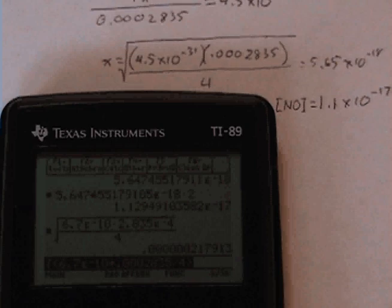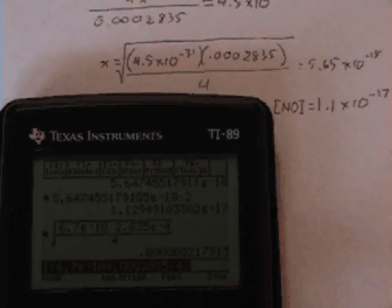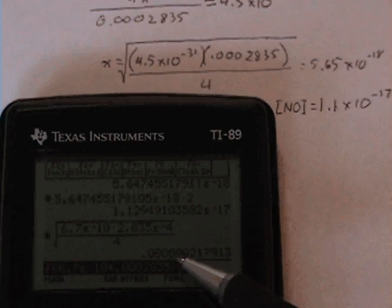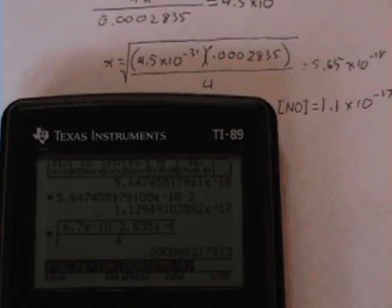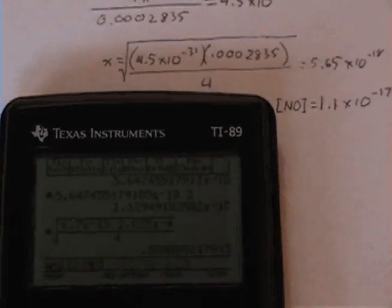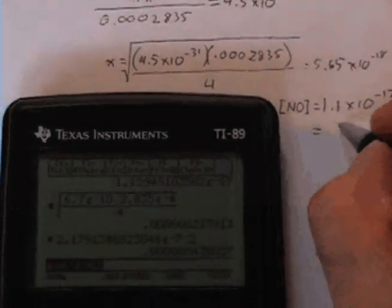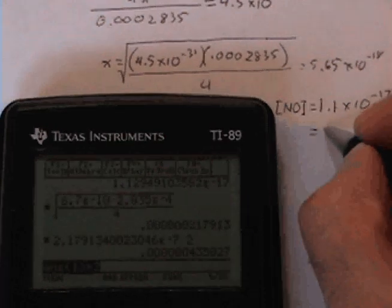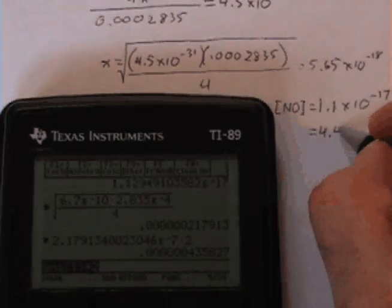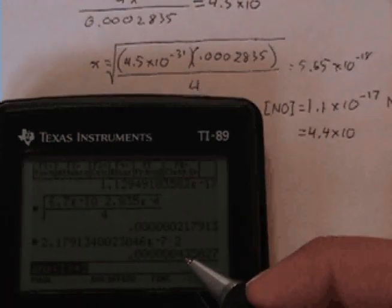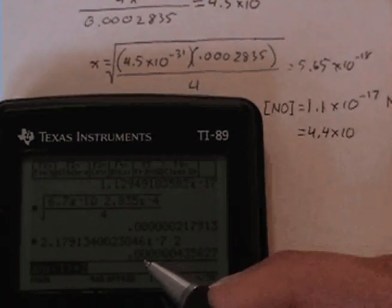And that gives us a value for x of about 2.2 times 10 to the minus 7th. But we multiply that by 2 to get our concentration of NO, and this ends up being 4.4 times 10 to the minus 7th molar.